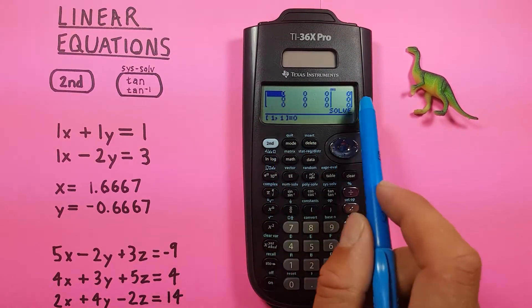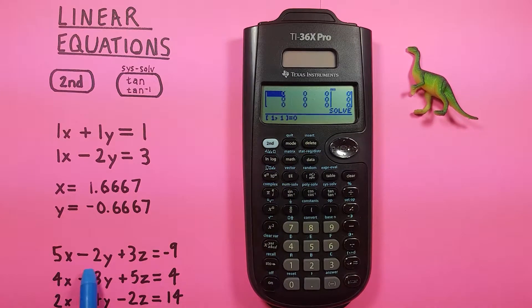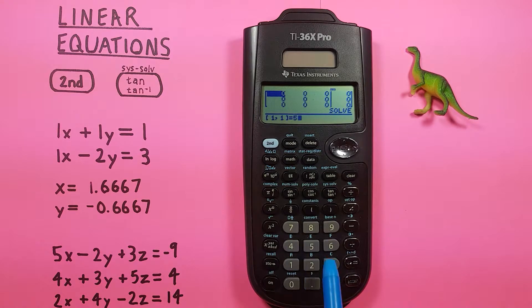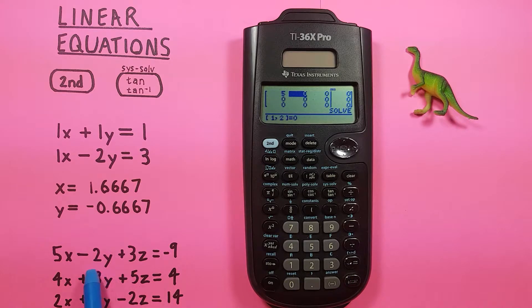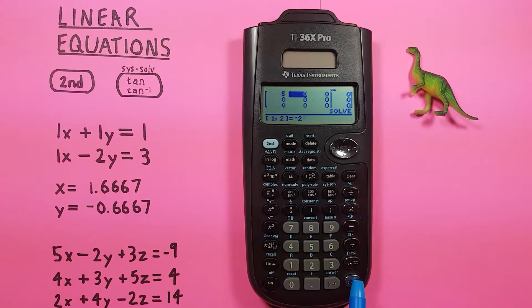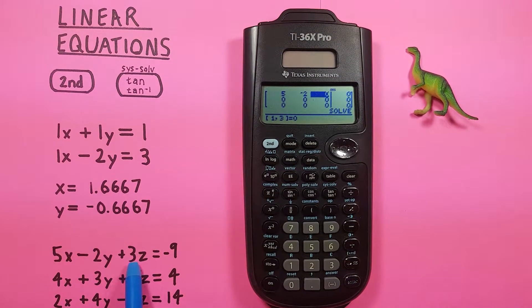So the first row will be our first equation, which is this here, 5X minus 2Y plus 3Z equals negative 9. So to get started, our first column will be our X's. So 5, enter. And then we have our 2Y, but this is a negative 2Y. So we do negative 2, enter.